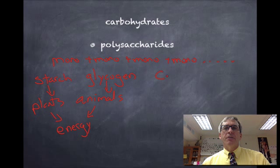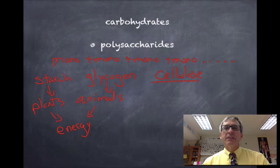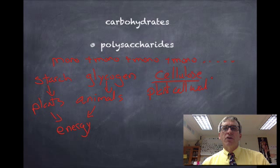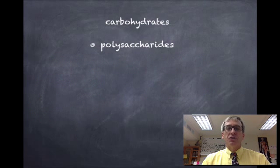The other important polysaccharide to know is cellulose. You and I can't digest cellulose — it passes through our body undigested as fiber. Many herbivores have microorganisms living in their digestive system that allow them to break down cellulose. Cellulose is found in plant cell walls and is a strong structural polysaccharide, allowing trees to reach great heights and allowing any plant cell to maintain its rigid shape.